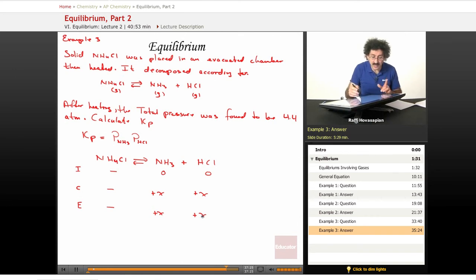Well, they're telling me that the total pressure in this flask is 4.4 atmospheres. Which gases are in the flask? Well, the solid is a solid. That doesn't matter. That doesn't do anything for the gas. The gases in here are NH3 gas and HCl gas. So I basically have X plus X equals 4.4. They're telling me that the total pressure in there is 4.4 atmospheres. That has to be made up of the amount of NH3 gas and the amount of HCl gas.